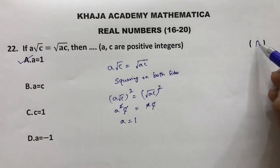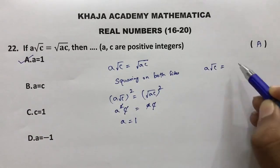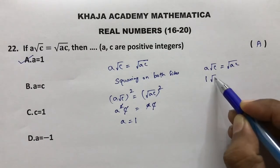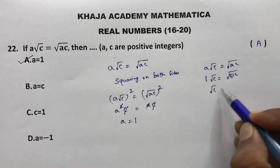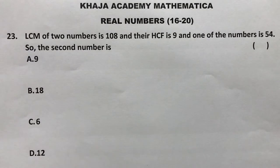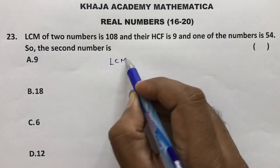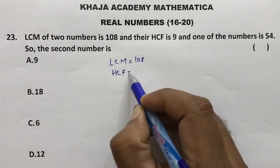You can also verify by trial and error using the options. Substituting a = 1: 1 × √c = √(1 × c), which gives √c = √c. This confirms the correct option is a = 1.